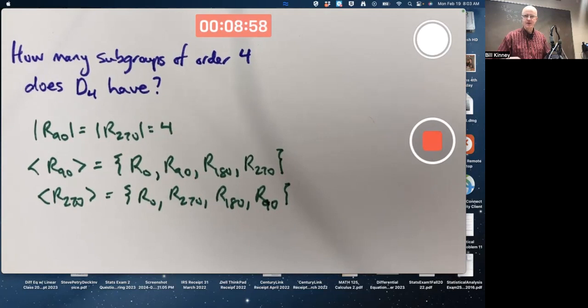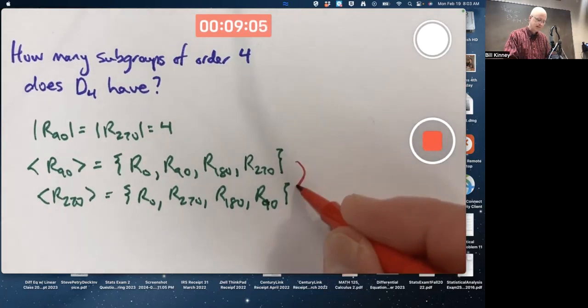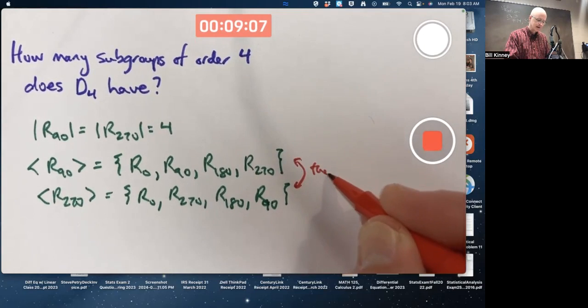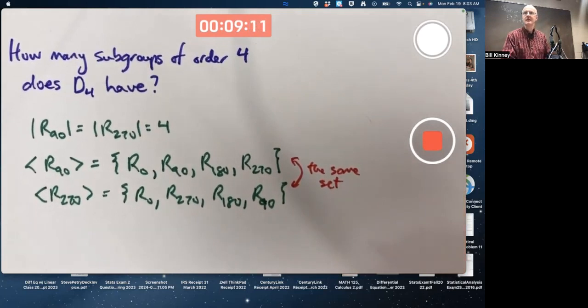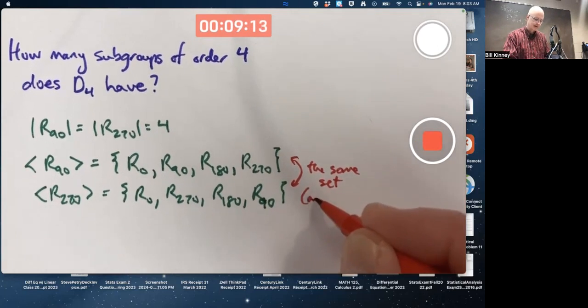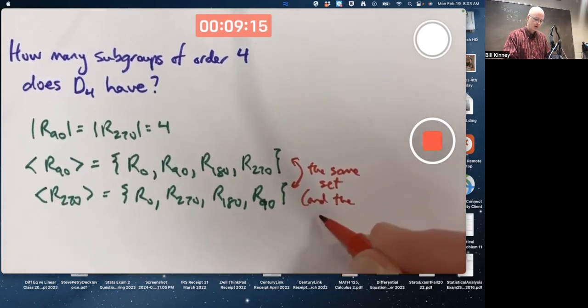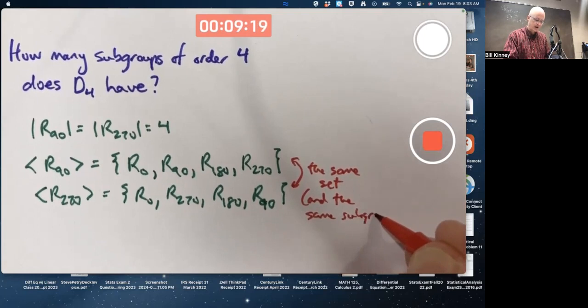This is not like trying to do a permutation in problem stats and counting different orderings as being different. These are the same set, and therefore the same subgroup of D4. So that's one of the answers.